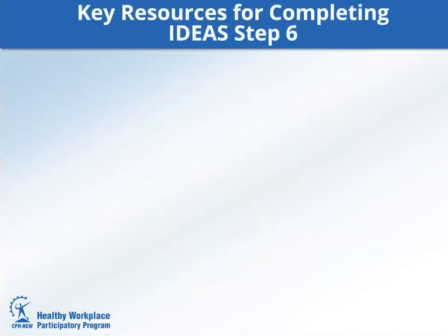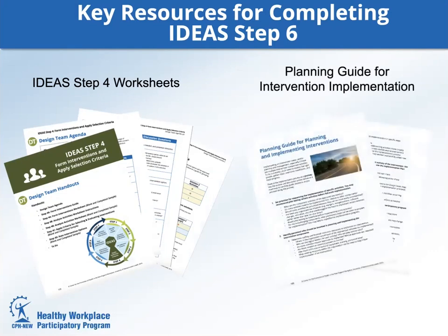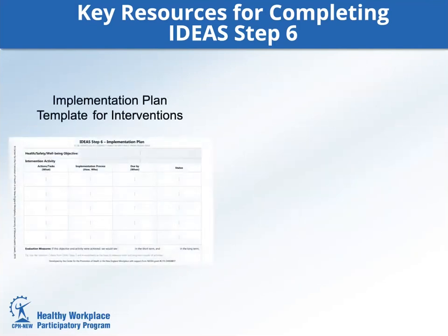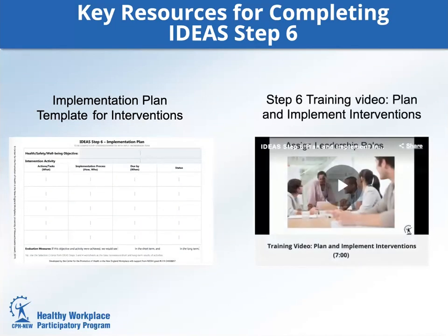The key resources for completing IDEAS Step 6 include: the IDEAS Step 4 worksheets, which provide a complete inventory of intervention activities, intended participants, desired outcomes, and potential obstacles; the planning guide for intervention implementation; the implementation plan template for interventions—use this or an existing project management tool to document tasks, deadlines, and responsible personnel; and the Step 6 training video, Plan and Implement Interventions. You can find these resources on the CPH New Healthy Workplace Participatory Program webpage.